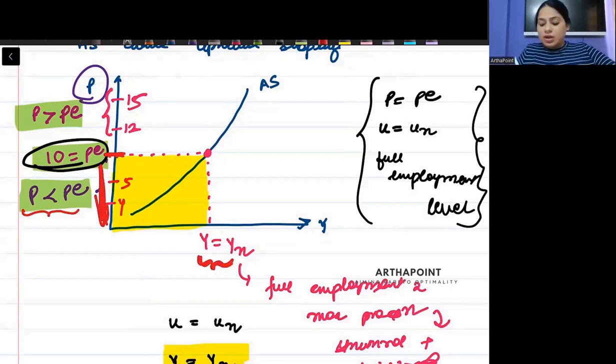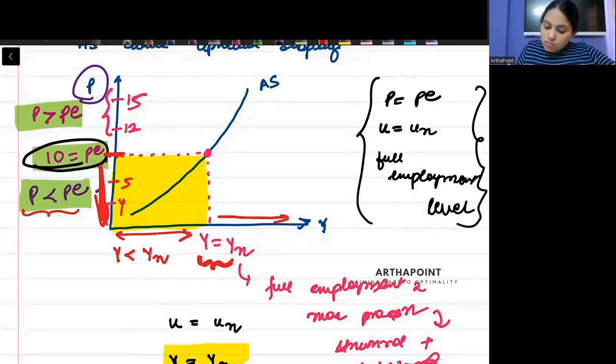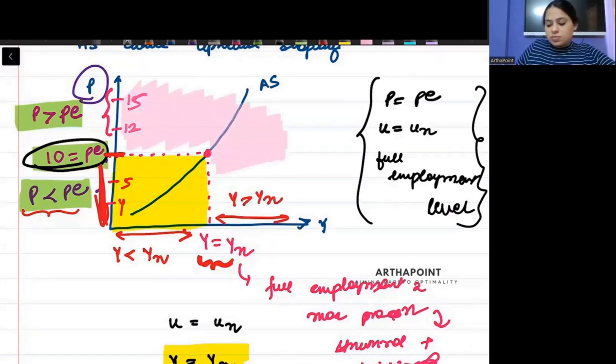But if this is where output is full employment, everybody is employed, maximum output produced. So in this zone, my output is less than YN. And in this zone, my output is greater than YN. Where is this zone? Here. Where is this zone? Actually, I should be marking the right one.